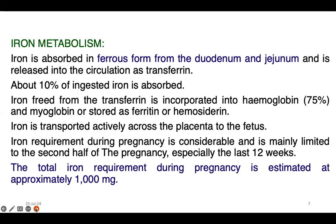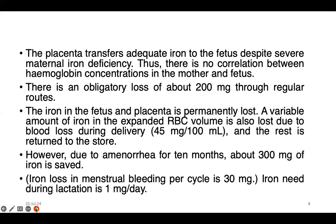75% of the iron released from transferrin is incorporated into hemoglobin as well as myoglobin, and stored as ferritin or hemosiderin. Iron is transported actively across the placenta to the fetus. Iron requirement during pregnancy is considerable and is mainly limited to the second half of pregnancy, especially the last 12 weeks. The total iron requirement during pregnancy is estimated at approximately 1000 mg.